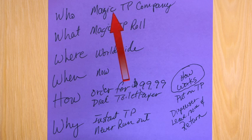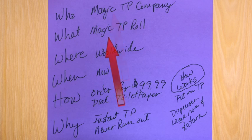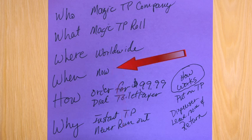Okay, who: I came up with the name Magic TP Company, or Magic Toilet Paper Company. What: my product is a magic toilet paper roll — so whatever your product is would be your 'what.' Where: we're going to ship this worldwide, so this is for everybody — that may or may not be important.